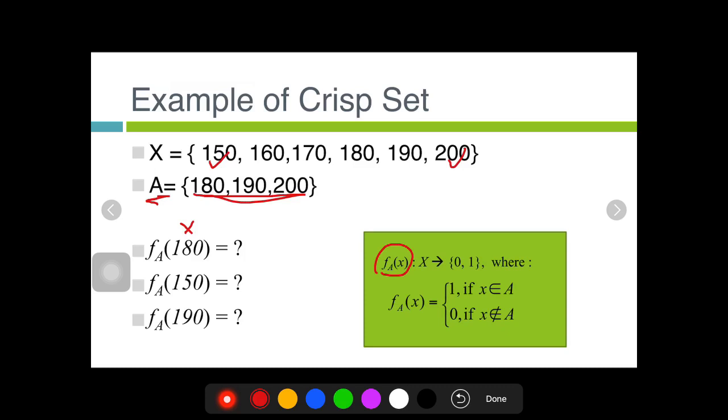Based on our discussion previously, since 180 is an element of A, then the value is one.